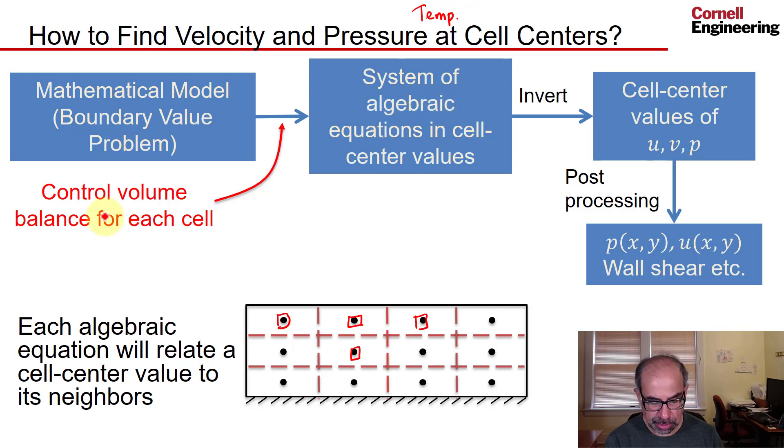When you go from the boundary value problem to a system of algebraic equations by a control volume balance, the solver will also do a control volume balance for energy for each cell and get an additional equation. So you have one additional algebraic equation per cell, and when you invert it, you get the cell center values of u, v, p, t, and then that can be post-processed, and you can get t of x, y, and so on.